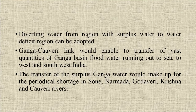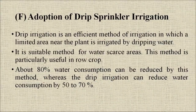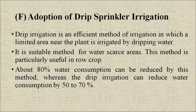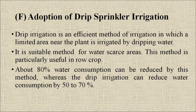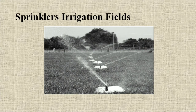The transfer of surplus Ganga water would make up for the periodical shortage in the Sone, Narmada, Godavari, Krishna, and Cauvery rivers. Adoption of drip and sprinkler irrigation: drip irrigation is an efficient method in which a limited area near the plant is irrigated by dripping water. It is suitable for water-scarce areas and particularly useful in row crops — about 80 percent water consumption can be reduced by this method, while drip irrigation can reduce water consumption by 50 to 70 percent.